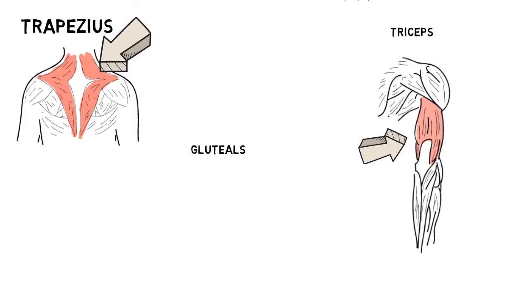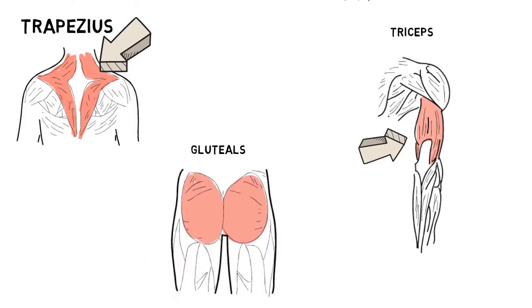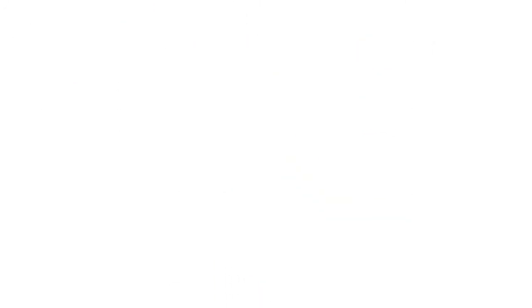Gluteals or glutes. Lunges are great for these muscles as well as the hamstrings. Muscles pull and don't push.